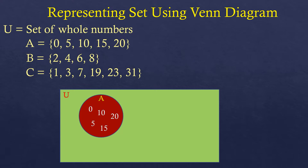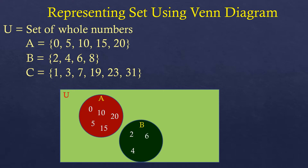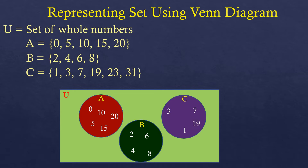Then we make another circle for set B with elements 2, 4, 6, and 8 — also part of the universal set. And then set C with elements 1, 3, 7, 19, 23, and 31. As you can see, the circles are not overlapping because they don't share any elements. If two sets have elements in common, then the circles must overlap, and you put the common element in between them. I'm going to show you that later.